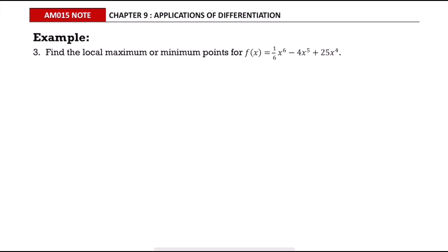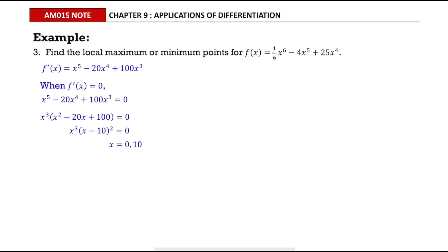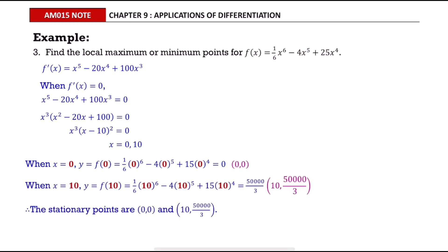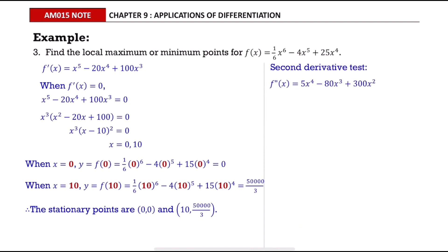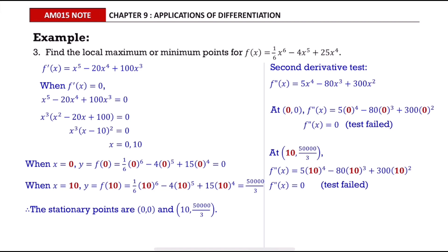In this example, we want to find local maximum or minimum points using the second derivative test. Find the first derivative first, then equate it to 0. Factorize and solve for the values of x. Substitute all values of x into the function to find the stationary points. Since we use the second derivative test, find the second derivative and test both stationary points. Both tests fail, so we have to use the first derivative test to solve.